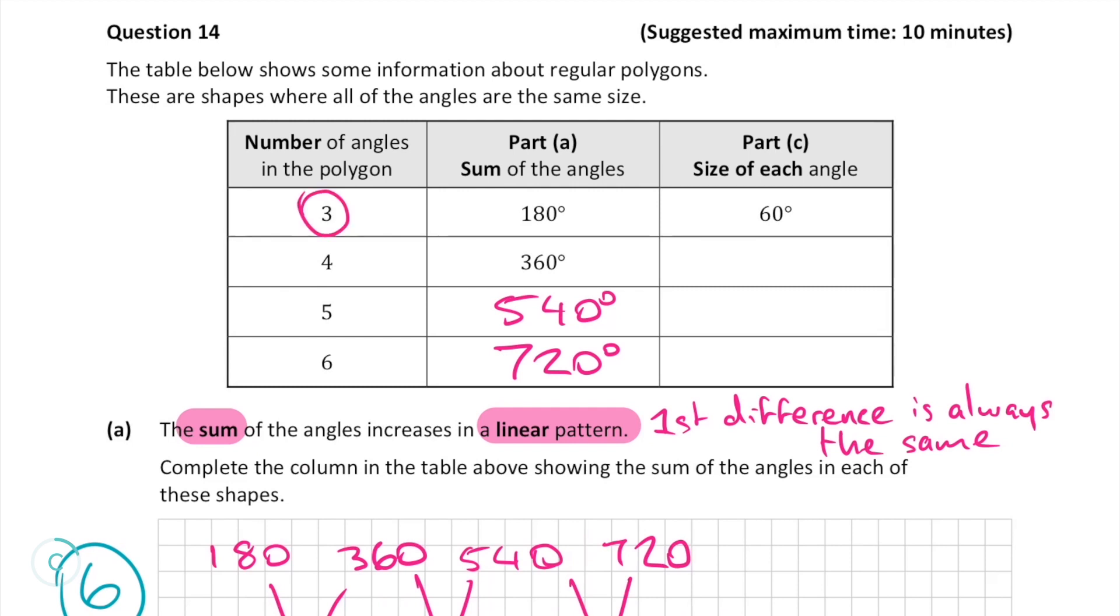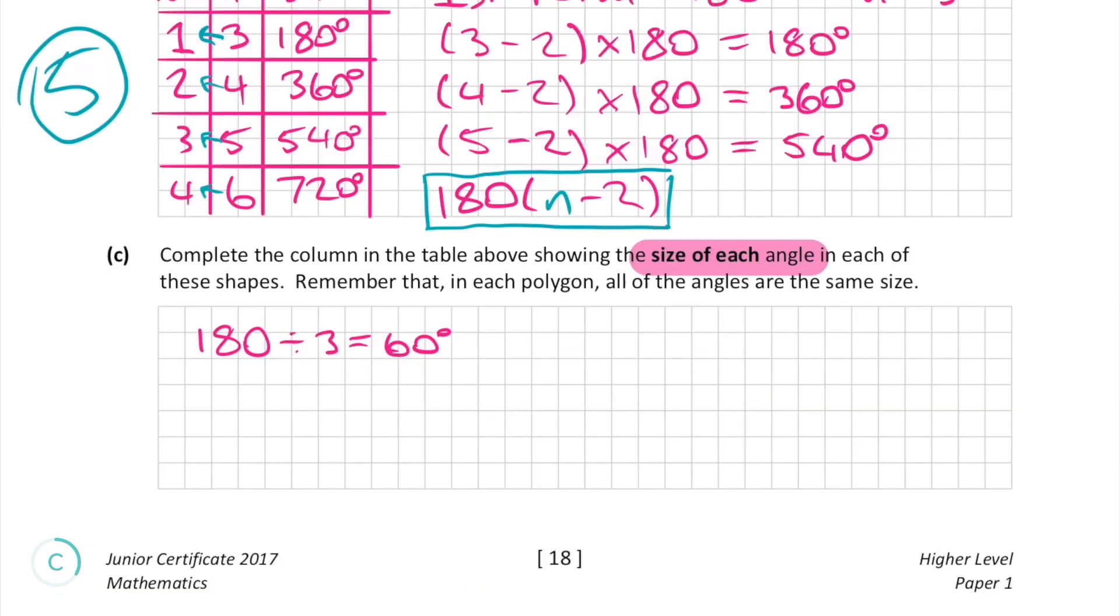Since the first polygon has three angles which all add up to 180 degrees we can work out that the size of each angle is 60 degrees. As an equation this can be written as 180 divided by 3 equals 60.